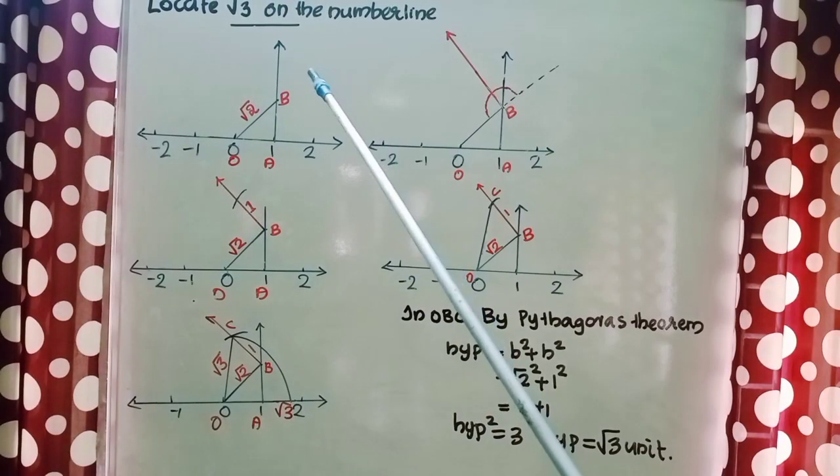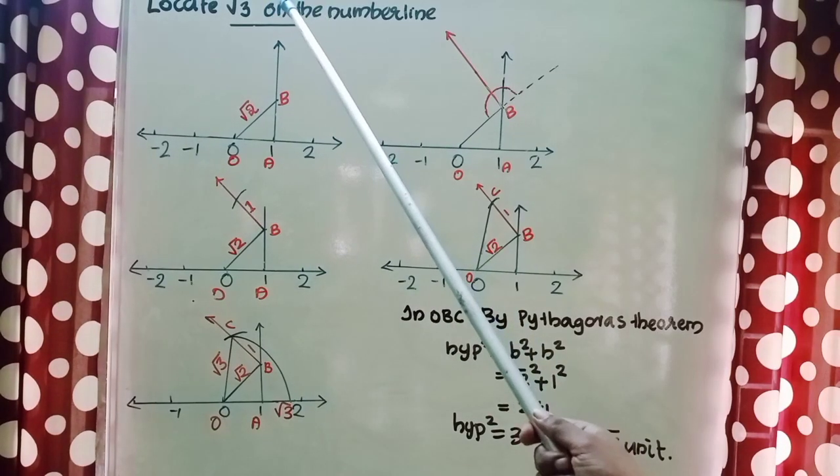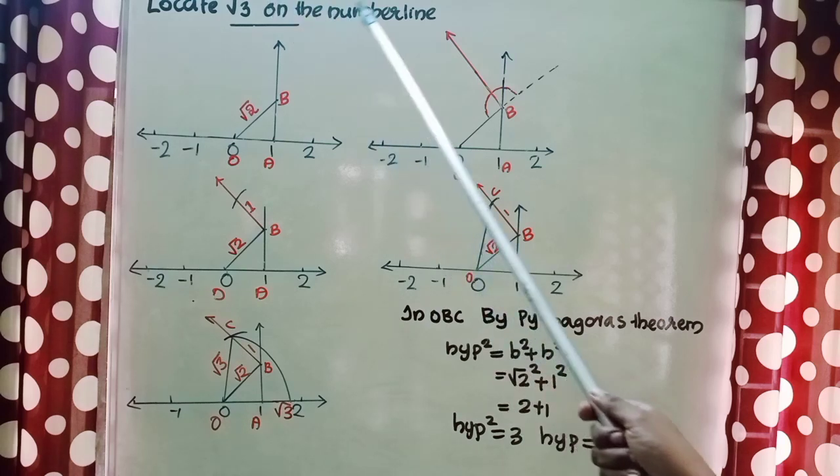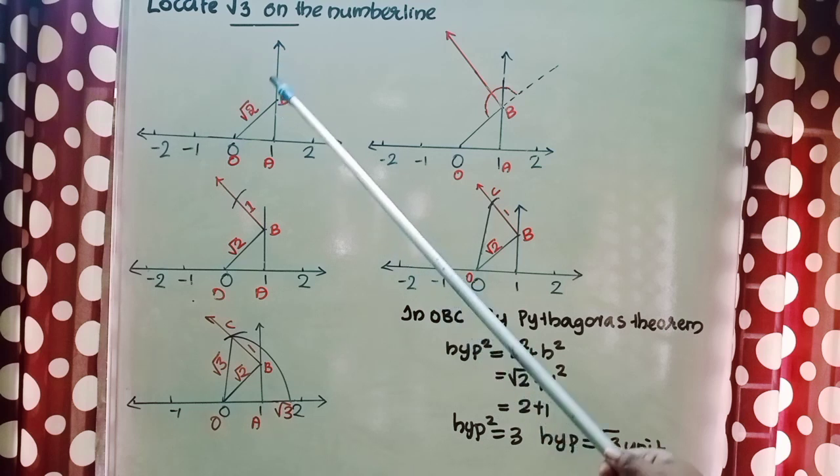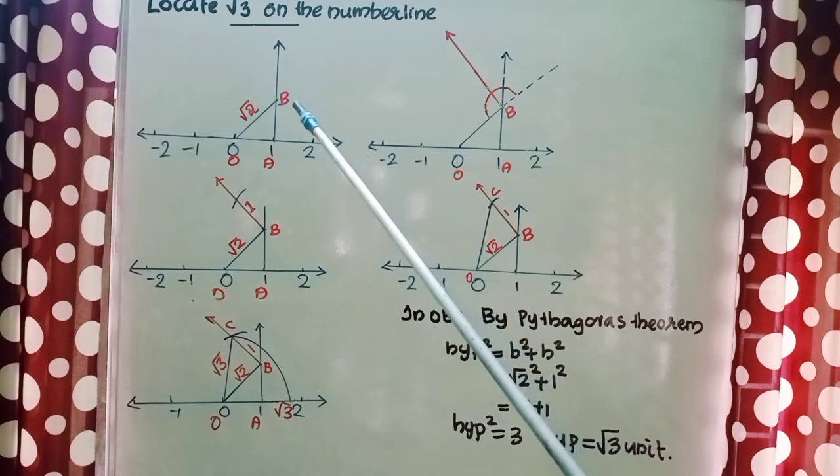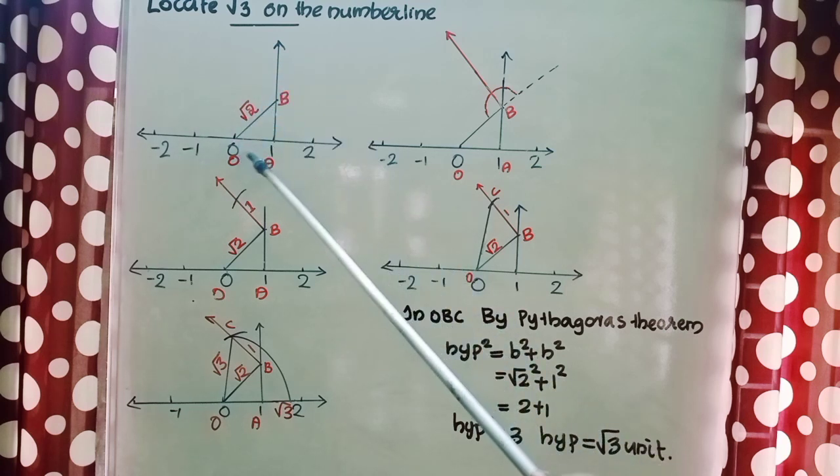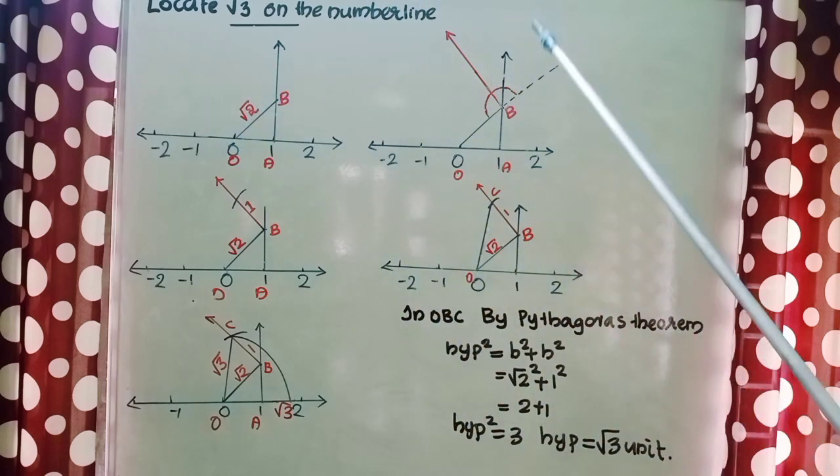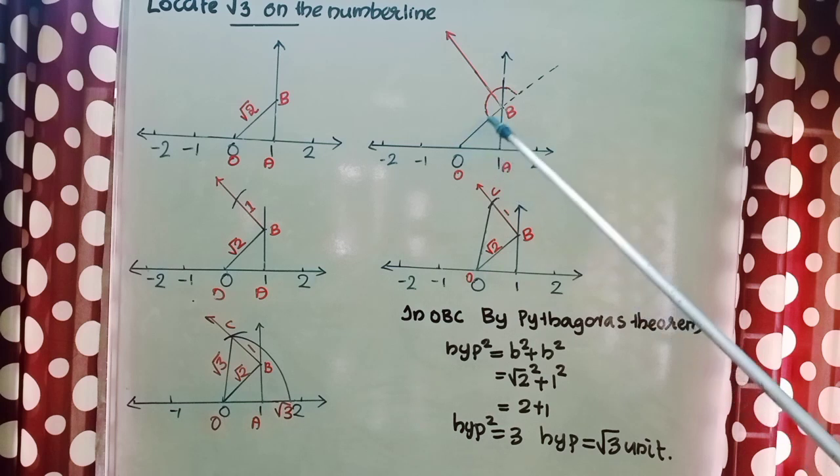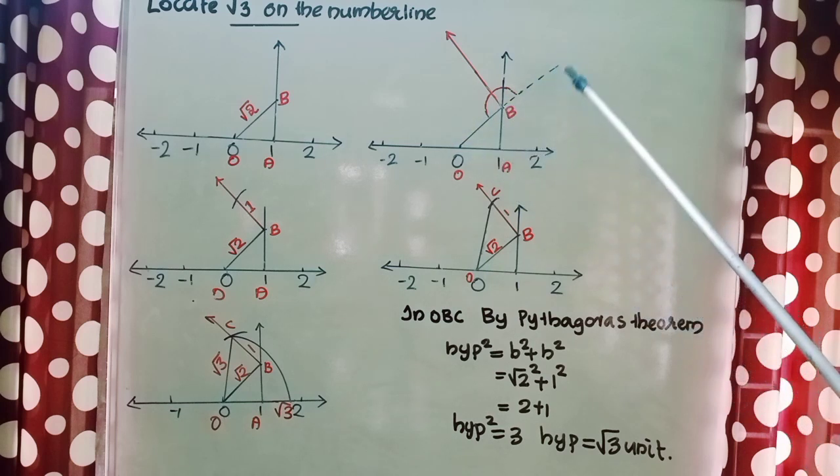Now let us discuss how to locate root 3 on the number line. First, you follow the same procedure for location of root 2 on the number line. After the formation of this triangle OAB, you just extend this line OB a little more.